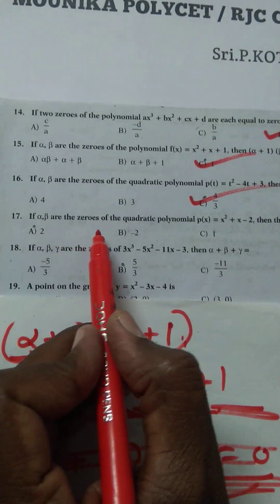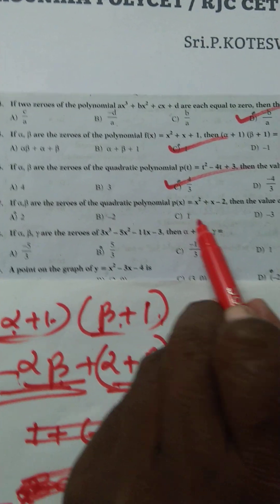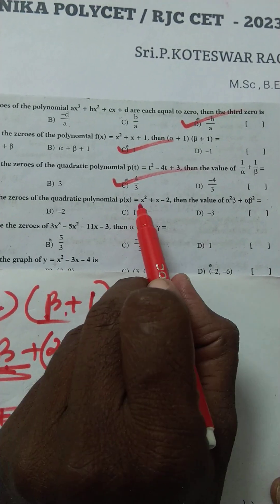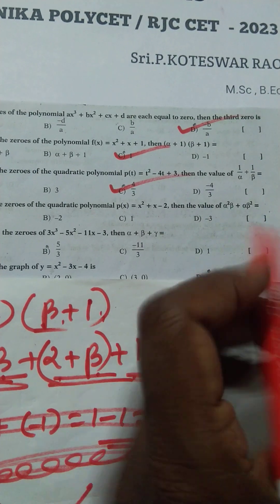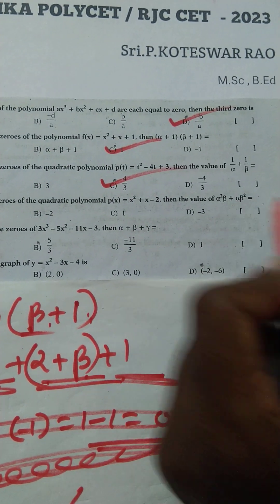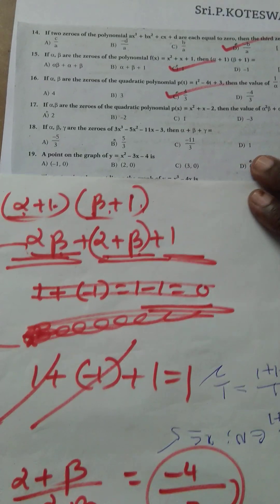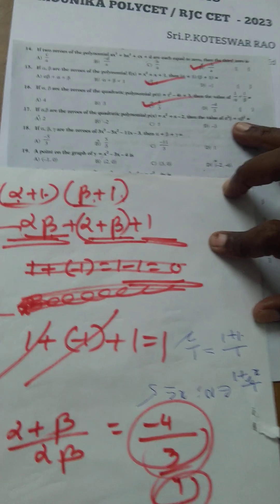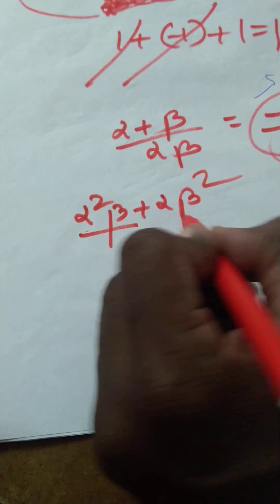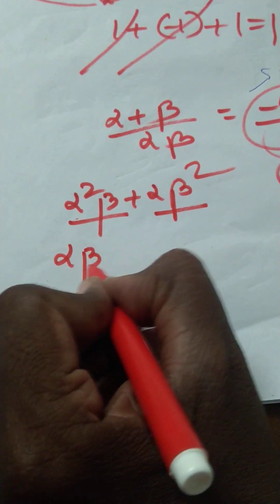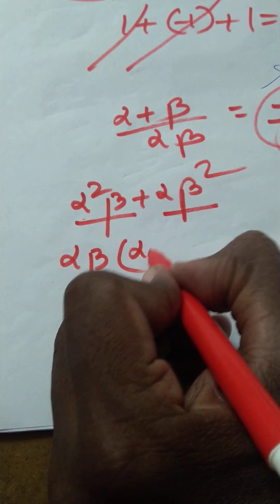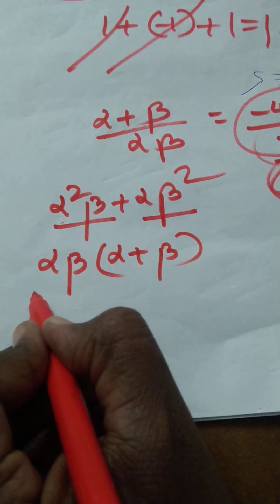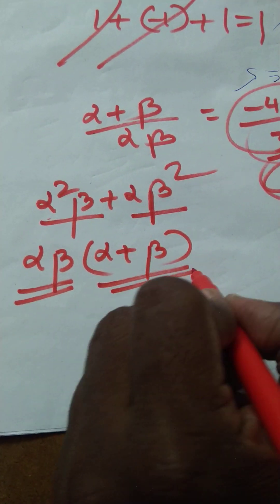Next: alpha, beta are the zeros of the quadratic polynomial p(x) = x² + x − 2. Find alpha²·beta + alpha·beta². This is a very easy sum. Factor out alpha·beta common from both terms, giving alpha·beta into (alpha + beta). This is the product of zeros times the sum of zeros.